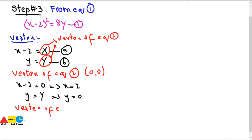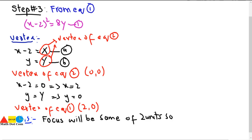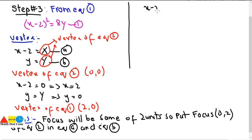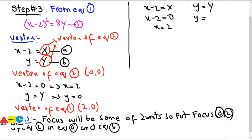For the focus of equation 1, substitute the focus of equation 2 — which is (0, 2) — into equations A and B. From x minus 2 equals X equals 0, x equals 2. From y equals Y equals 2, y equals 2. So the focus of equation 1 is (2, 2).